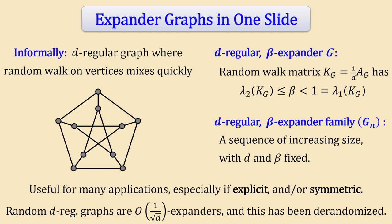This talk is about high-dimensional expanders, so I need to start by telling you what expander graphs are. Informally, a d-regular graph is an expander if the random walk on its vertices mixes quickly. More formally, a d-regular graph is a beta-expander if the random walk matrix — which is 1/d times the adjacency matrix — has second largest eigenvalue lambda_2 at most beta, where beta is smaller than 1.